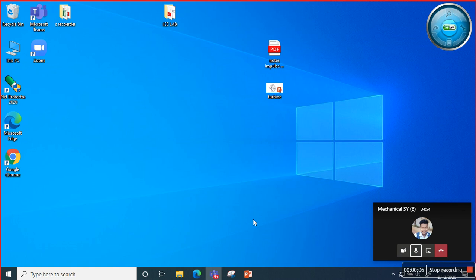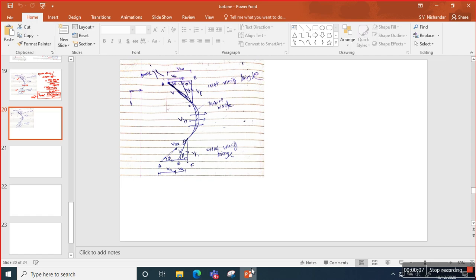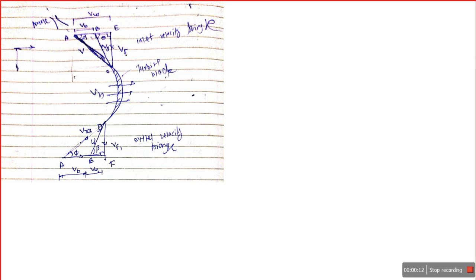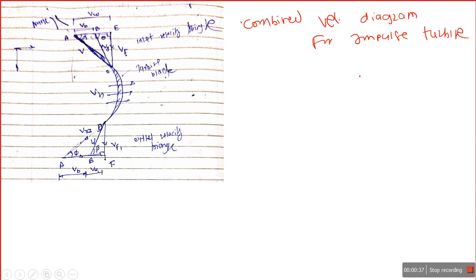Let's start with our combined velocity triangle diagram for the impulse turbine. For reference, we have the inlet velocity and outlet velocity triangle diagrams, and now we are going to combine them. Remember that for solving numericals related to the impulse turbine, they use the term 'de Laval turbine' — so always remember this is also called the de Laval turbine.